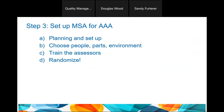Now you move into the agreement analysis itself. Planning and setup: choose the people, choose the parts, choose the environment, and train the assessors. Randomizing is important — you do not want all the same parts going through the same order multiple times for the inspectors, and you don't want inspectors seeing them in the same order. Randomizing provides your overall study with robustness.